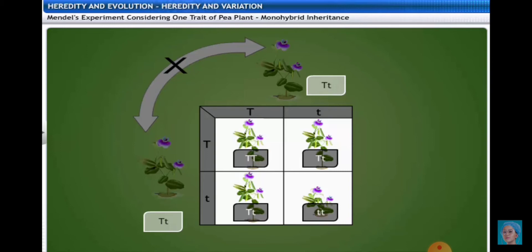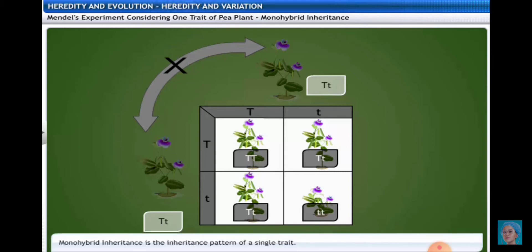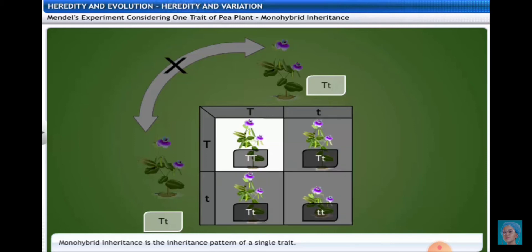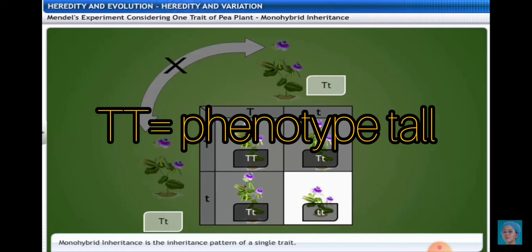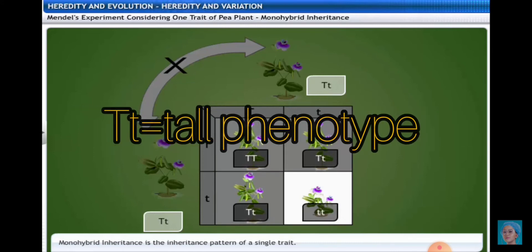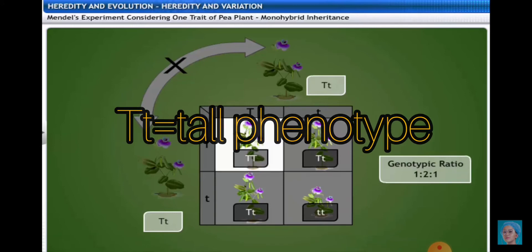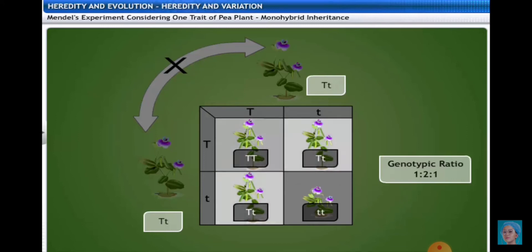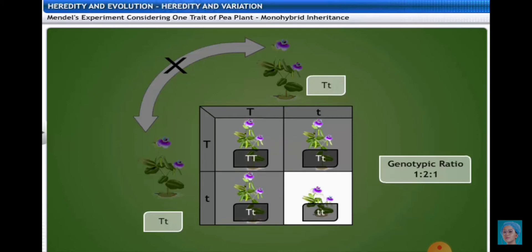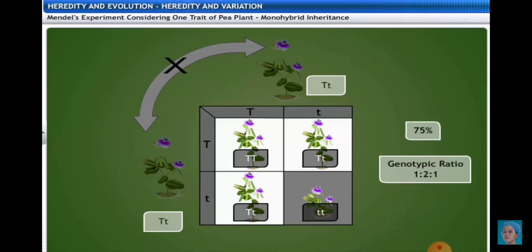After this cross, Mendel observed that the dwarf characters reappeared in the offspring. The phenotype of TT and Tt will both be tall, giving three tall plants total, while tt shows the short character. So the phenotypic ratio is 3:1.